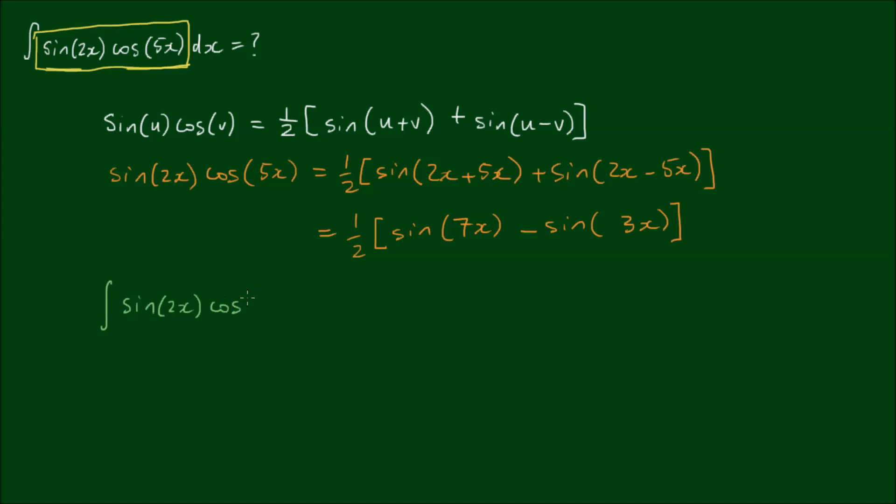So now the integral of the sine of 2x by the cosine of 5x becomes the integral of a half of the sine of 7x minus the sine of 3x dx. And we can now write this as two separate integrals.